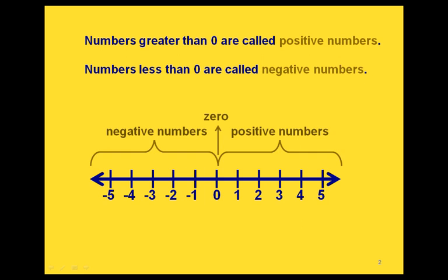If we look at a number line, we have zero right in the middle. If we go to the right, we have positive numbers. If we go to the left of zero, we have negative numbers, and right in the middle is zero.